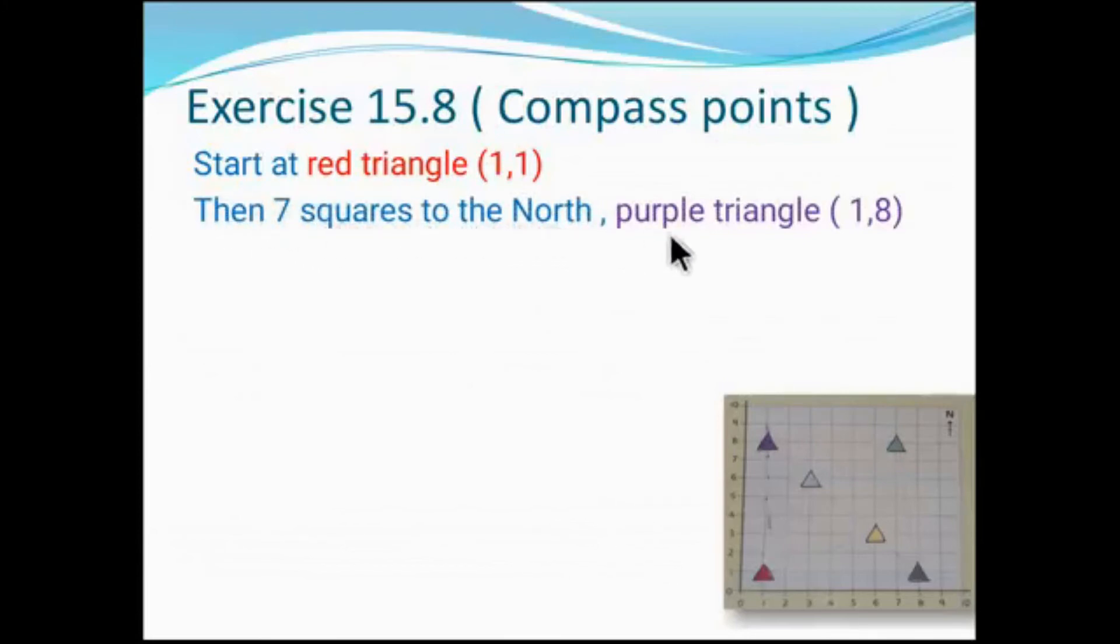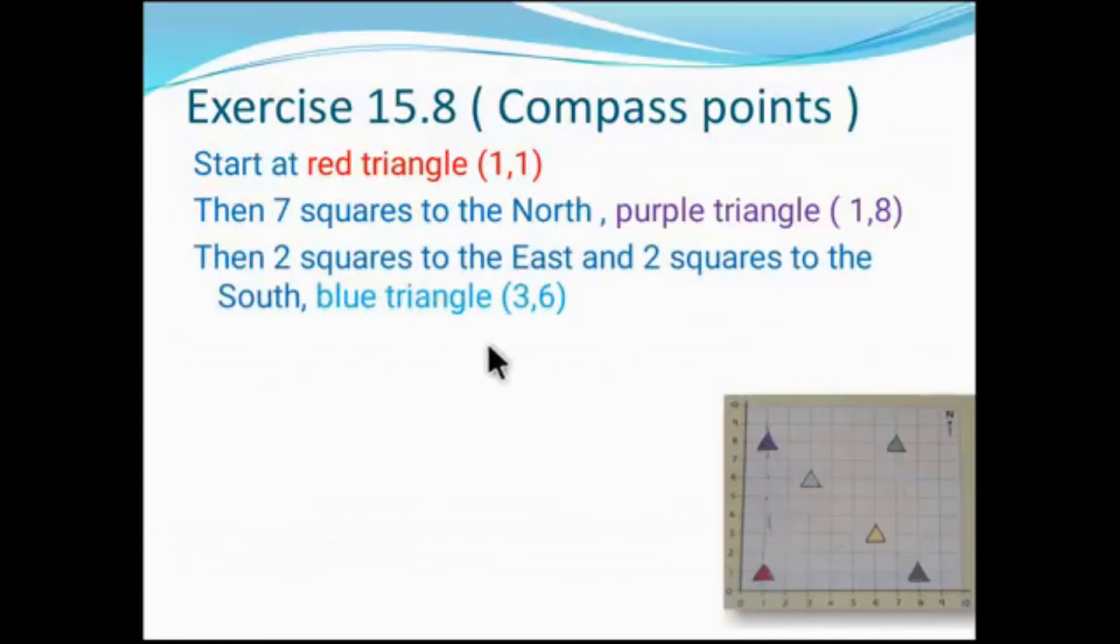We can get the purple, and purple coordinates (1,8). In the east way you can go to blue. Two squares to the east and two squares to the south we can get the blue triangle, and the coordinates is (3,6).